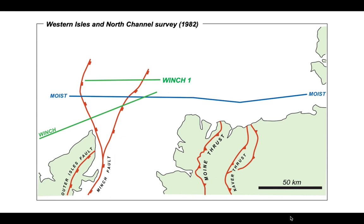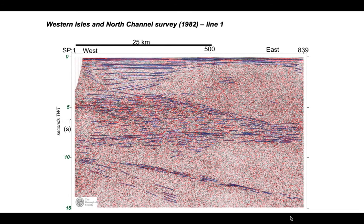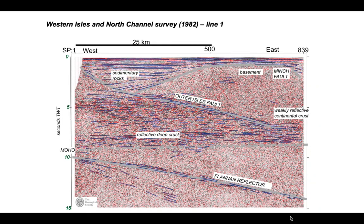Could they find it again? This is the Winch 1 line, and again we can build up an interpretation — draw the reflectors and interpret them — and we can see all the key components identified in the MOIST profile. There's reflective deep crust and all that crustal structure associated with the outer isles fault. But then below the Moho, we see all that reflectivity, particularly the Flannan reflector inclined gently down from west to east.